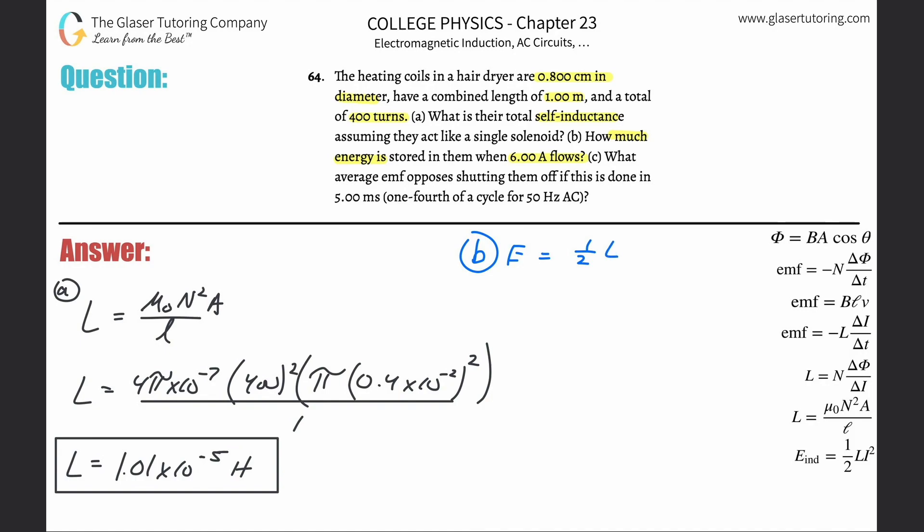We have the energy stored in an inductor equal to one-half multiplied by the inductance, multiplied by the current that's flowing through it squared. So basically we're going to take this inductance we just found, 1.01 times 10 to the minus 5th, plug in the current—it's saying how much energy is stored when 6 amps flows, so that's the current—square it, and voila.